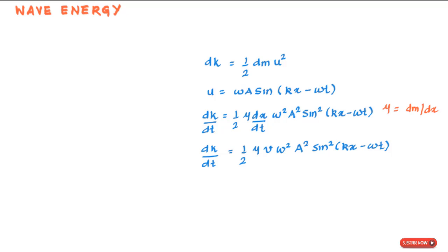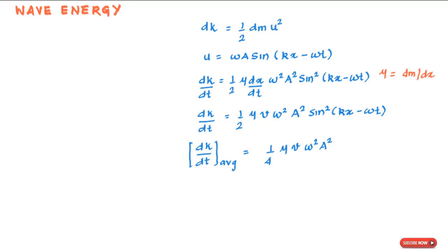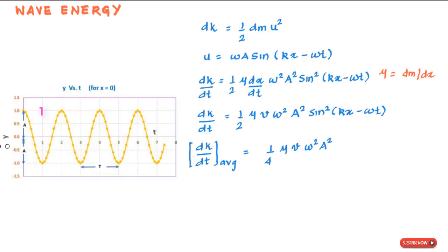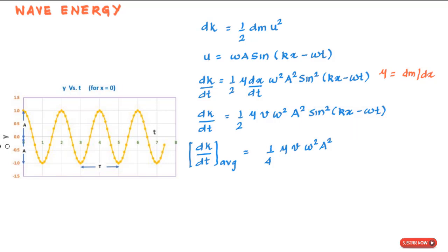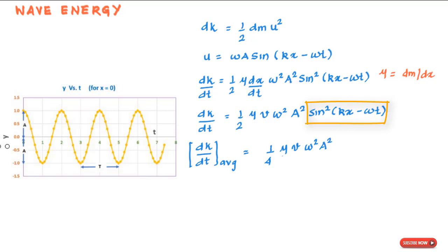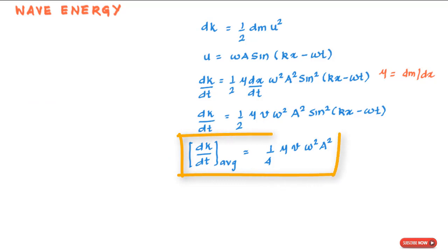To find the average rate of kinetic energy transfer, we take the time average over an integer number of wavelengths. Using the fact that the average of sin² (or cos²) over an integer number of periods is ½, we get: (dK/dt)_avg = ¼ μ v ω² A².